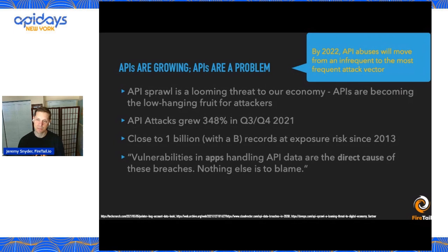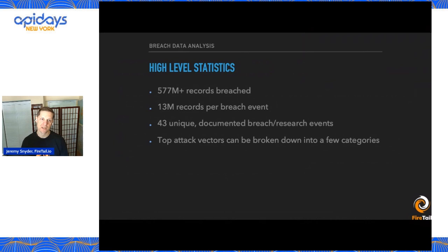We'll talk about the impact of breaches later in today's presentation. Some high-level stats: 577 million records fully breached and proven to have been exfiltrated. On average over the last 10 years, we've seen 13 million records per breach event, across 43 unique documented breach events that went into the report we have just commissioned.